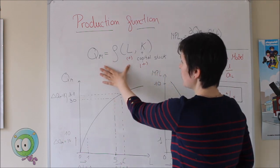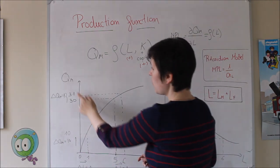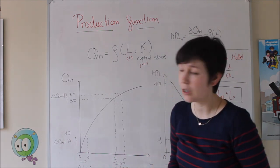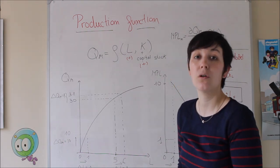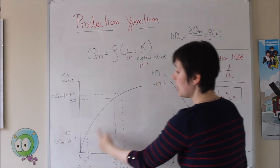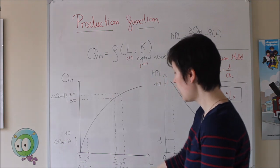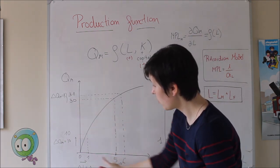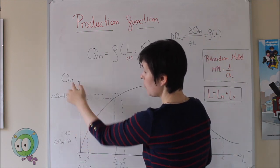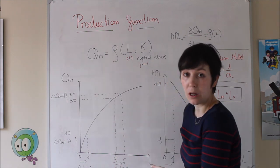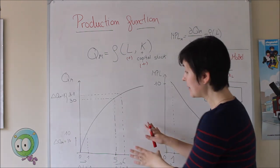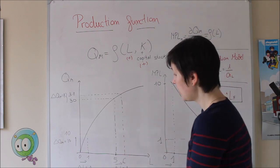Now we are going to draw that production function. On the horizontal axis we have labor used, and on the vertical axis we have quantity produced in the manufacturing sector. The first thing is the positive relationship between both variables — higher labor means higher output, which is why the slope of this function is positive. We can also realize that the relationship is not constant because this is not a straight line; instead, it's concave, and that is going to have a really important implication.